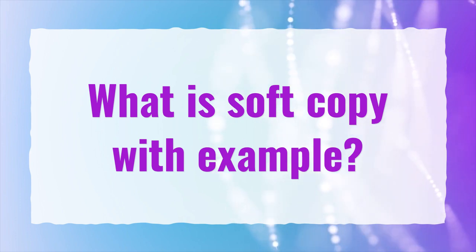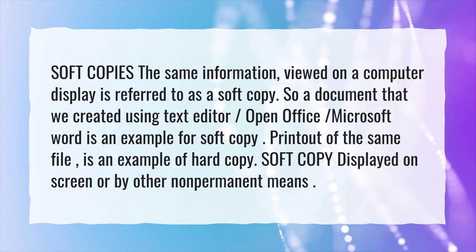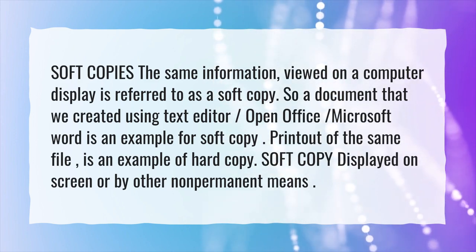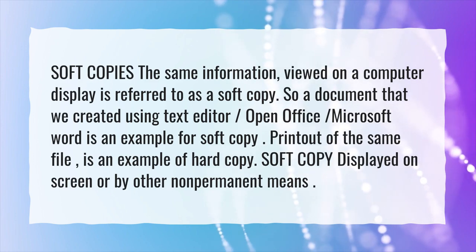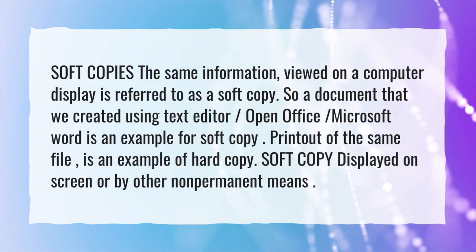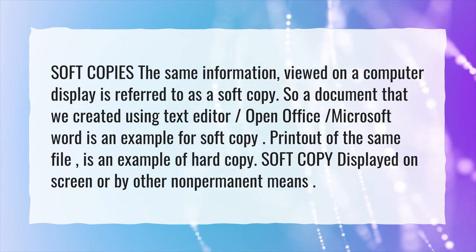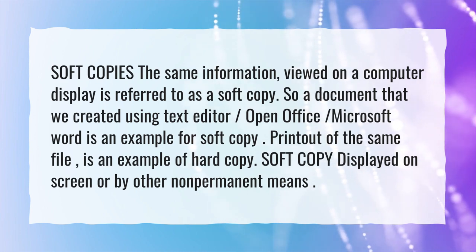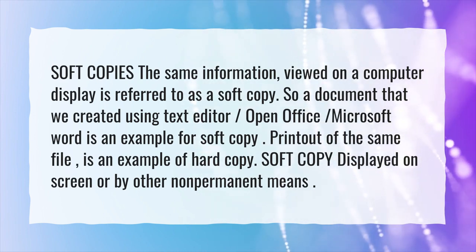What is soft copy with example? The same information viewed on a computer display is referred to as a soft copy. A document created using a text editor, OpenOffice, or Microsoft Word is an example of a soft copy. A printout of the same file is an example of a hard copy. Soft copy is displayed on screen or by other non-permanent means.